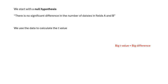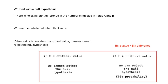A significant difference means that something is affecting what's going on — maybe the soil has more nutrients in it, maybe that field gets more sunshine, something like that. If the T-value is less than something called the critical value, then we cannot reject the null hypothesis. If the T-value is bigger than the critical value that we look up in a table, then we probably can reject the null hypothesis. There's a 95% probability that the difference is significant.